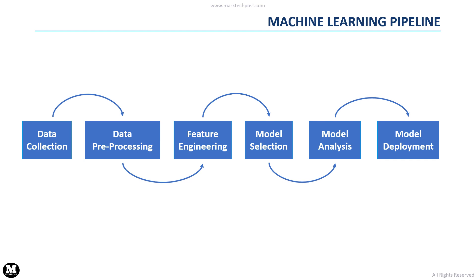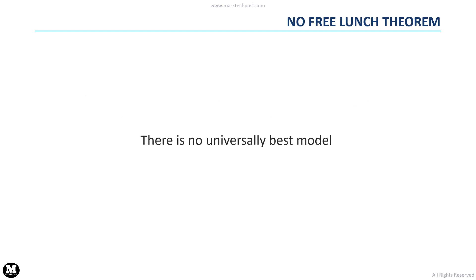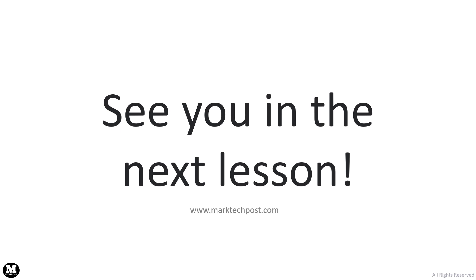The last step consists of the deployment of the model, which can be used to solve our task in a real-world scenario. The last thing we will talk about in this lesson is the so-called no-free-lunch theorem. This theorem claims that there is not a universally best model for a specific task. For this reason, we have to build different models and evaluate each of them on our data to find the best one for our problem. See you in the next session of this course, where we will talk about some very useful Python libraries for machine learning tasks.